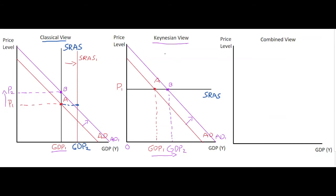What we can do is combine both schools of thought. The combined view is that the short-run aggregate supply curve initially starts quite flat where there is spare capacity in the economy, but as that spare capacity is used up — as we reach the end point of our natural resources, labor, or capital — we reach almost a vertical point. So the short-run aggregate supply curve is upward-sloping, coming to almost a vertical point at the end where capacity is reached.